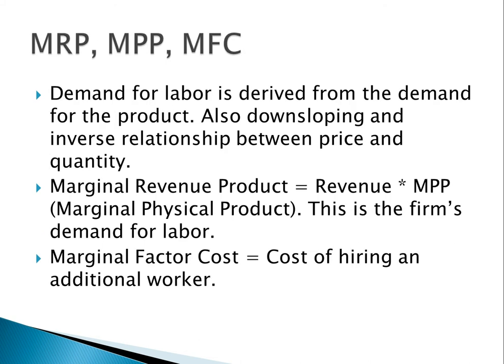The demand for labor is derived from the demand of the good. This means that the graph of labor will look very similar to the demand graph of the good. It's always downsloping with an inverse relationship between price and quantity — as wages go up, less labor is hired, and as wages go down, more labor is hired.